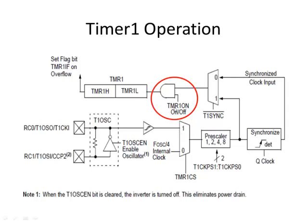There's a bit in the control register called the timer 1 on bit, which just turns the timer on or off. It doesn't actually turn power on or off — it allows clock pulses to come through, like an AND gate. If this bit is 0, you've got a 0 on one pin of an AND gate, so the output will always be 0 regardless — basically turning the timer off, blocking clock pulses from reaching it. When this bit is 1, every time you get a pulse, that pulse will come through to the timer.